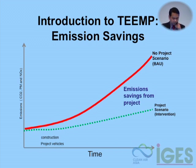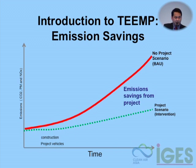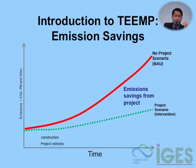The project scenario emissions consist of emissions from operations — for example, how much a BRT fleet would emit — and emissions from construction. For projects like MRT, construction emissions are very large; several years of operating the system can be equivalent to the construction emissions, so this must be taken into account.